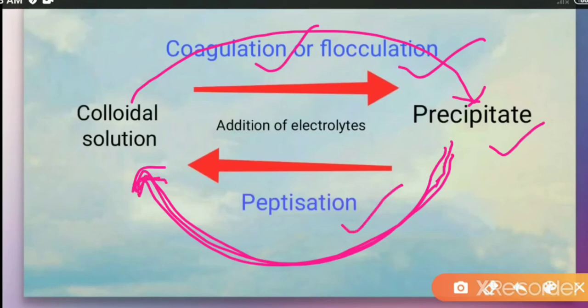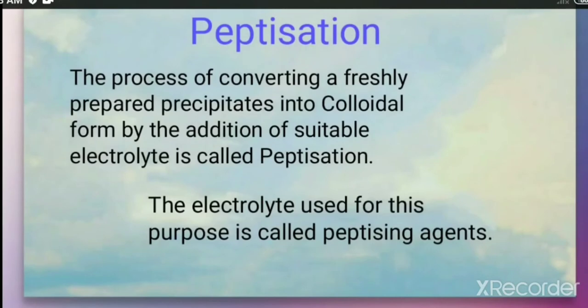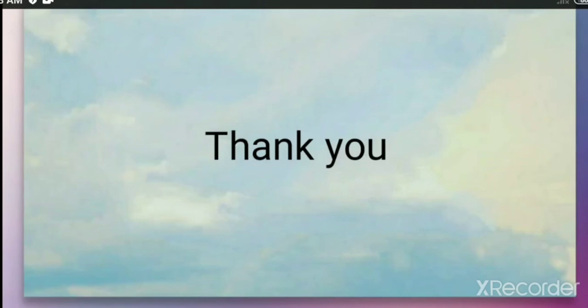Let us define peptidization: the process of converting a freshly prepared precipitate into colloidal form by adding a suitable electrolyte is called peptidization. The electrolyte used for this purpose is called the peptidizing agent. This is all about the difference between peptidization and coagulation. Thank you everyone.